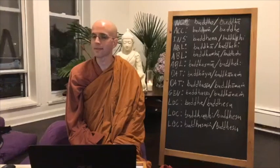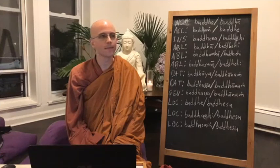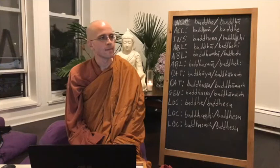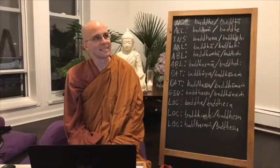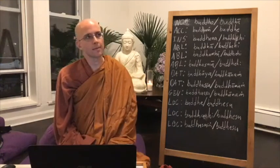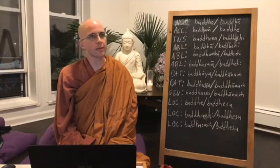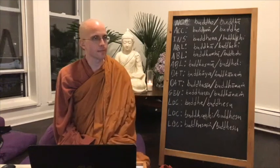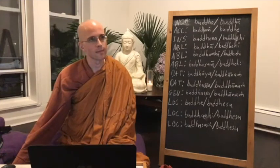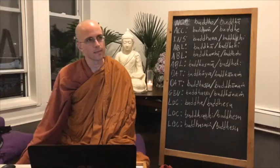Regarding dative: 'for' is the preferred translation rather than 'to' or 'because.' 'Because' would be instrumental or ablative. If you want to say 'because of this, that happened,' 'because of this' would be instrumental. Ablative would express 'from the existence of this, there is the existence of that.' A classic example is dependent origination: 'Avijjapaccaya sankhara' — Avijjapaccaya is ablative, meaning 'from the condition of ignorance, there are formations.'